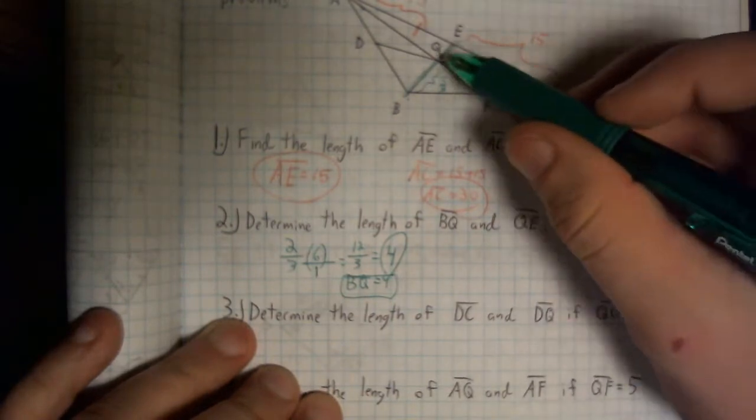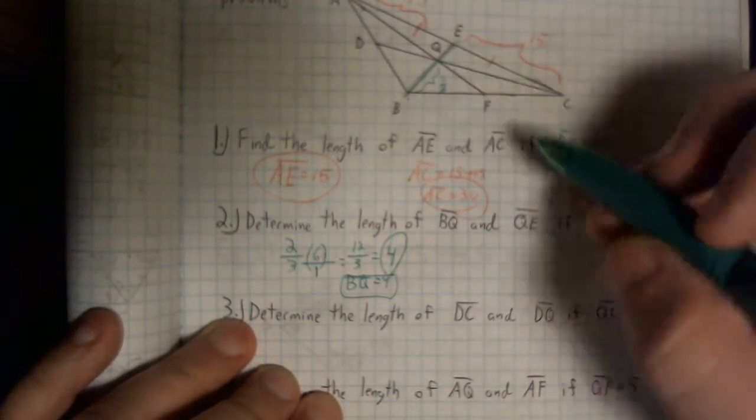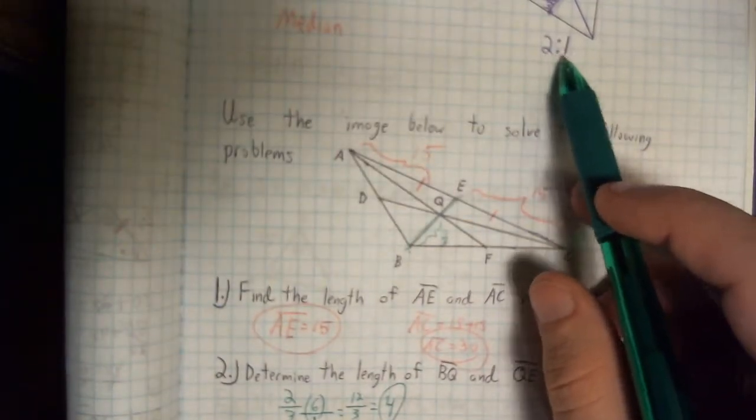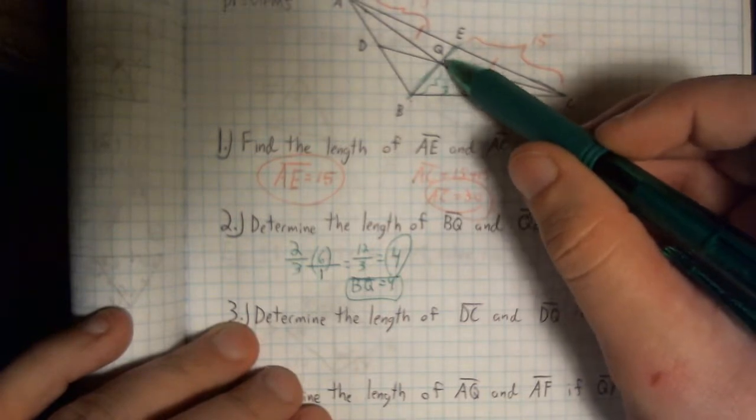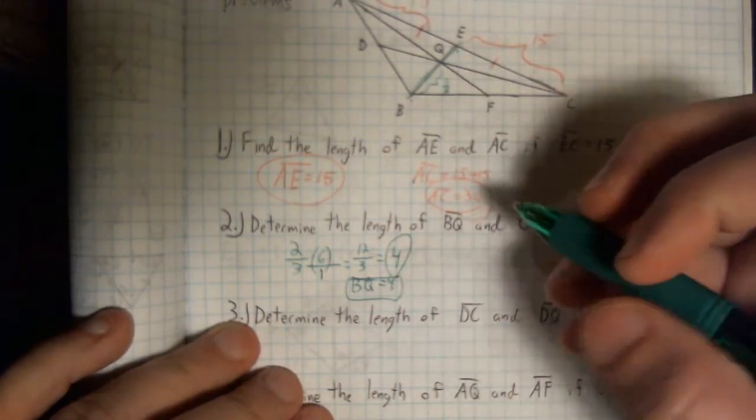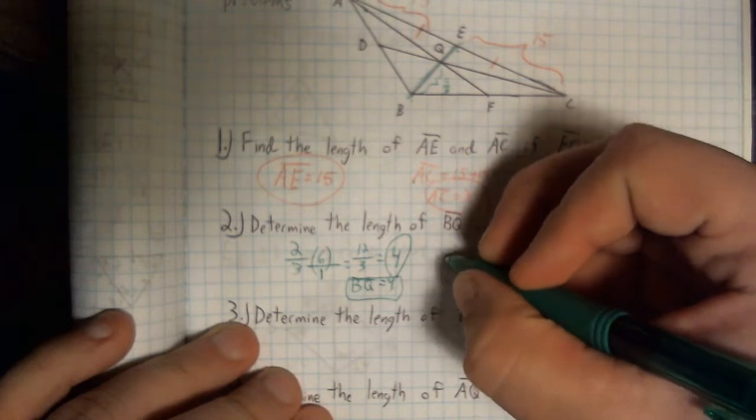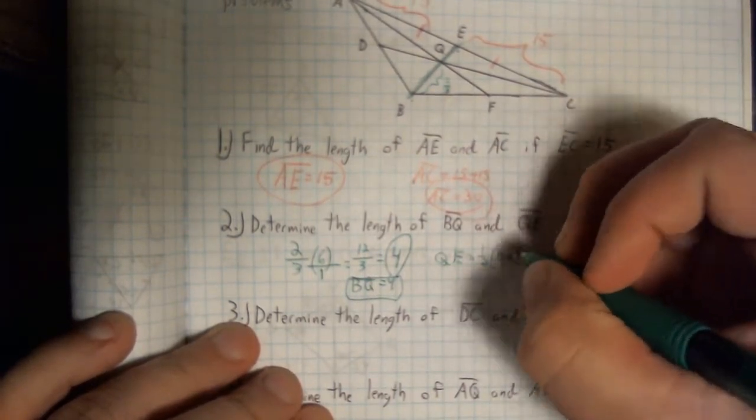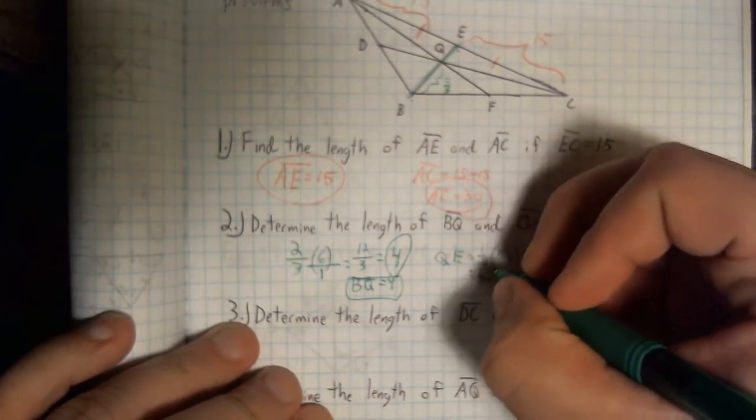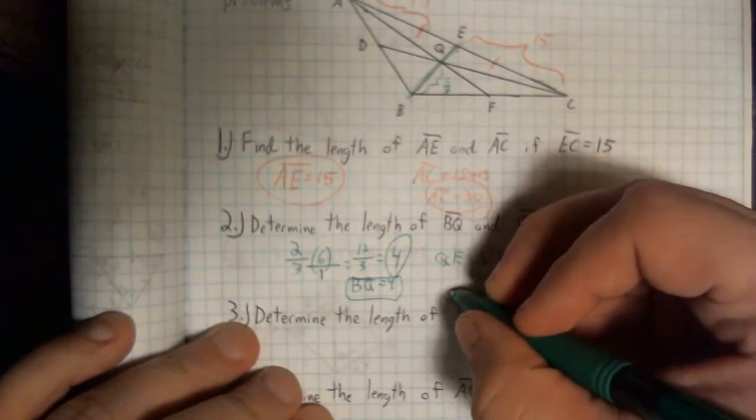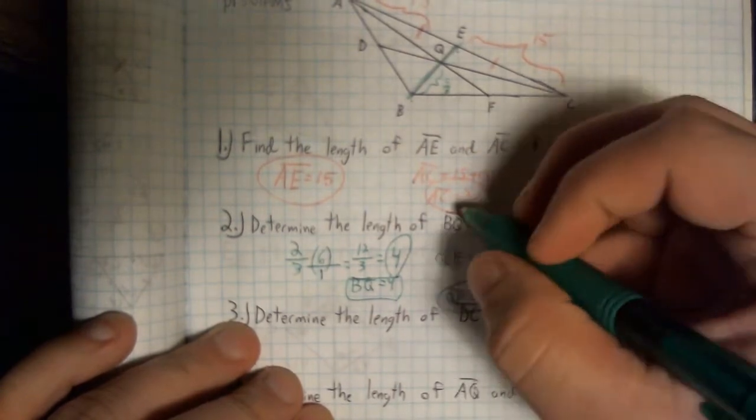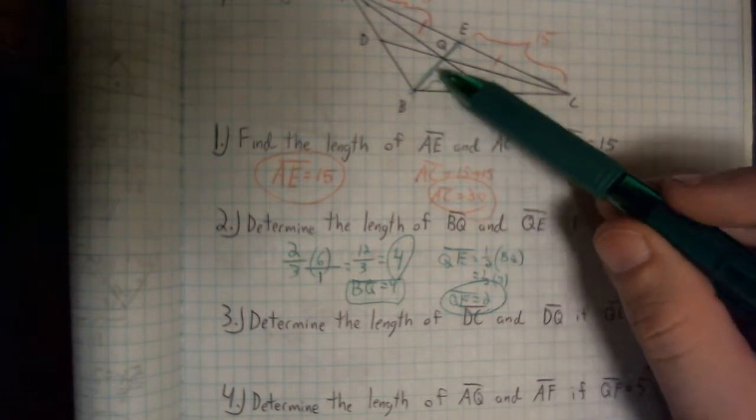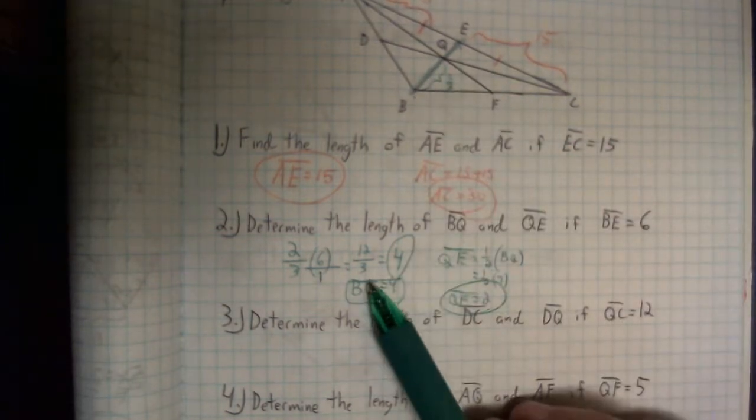Okay. They also want to know QE. Well, BQ is 4, and we discussed that there's a 2 to 1 ratio between those two pieces. So, really, QE is half of whatever BQ is. So, QE equals half of BQ. That's one-half of 4, which is 2. Okay. So, we used the fact that this was two-thirds in order to get BQ.